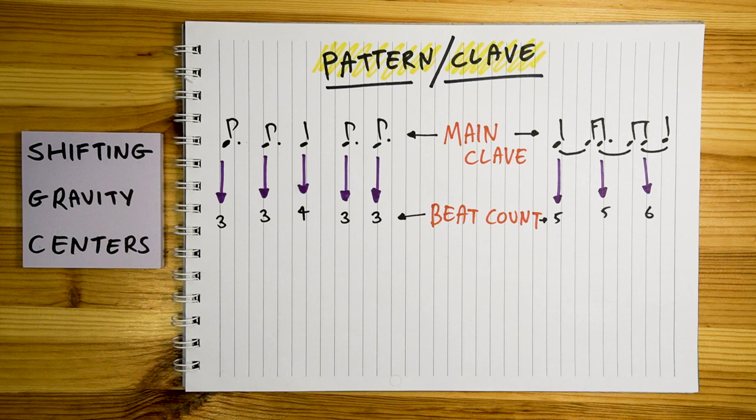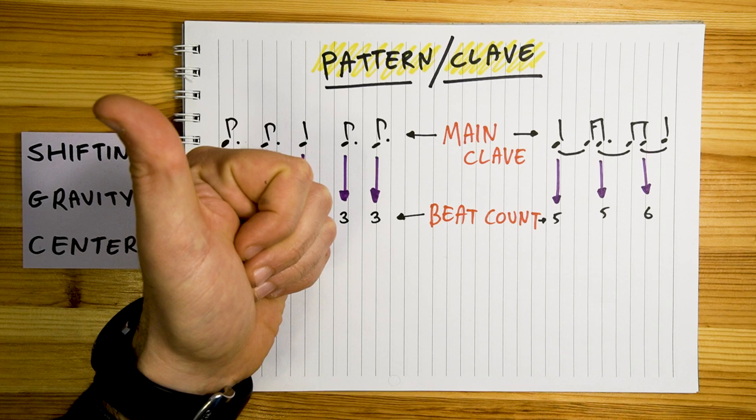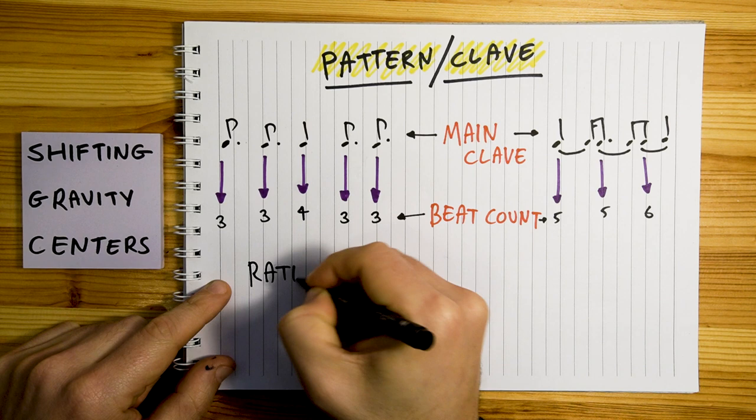For this video, I'm gonna focus on the main claves. The idea I call Shifting Gravity Centers deals with the manipulation of these numbers — the sub-beats — while the main clave stays fully intact. When diving into this rabbit hole, we get into scary musical notation concepts called ratio tuplets and nested tuplets.